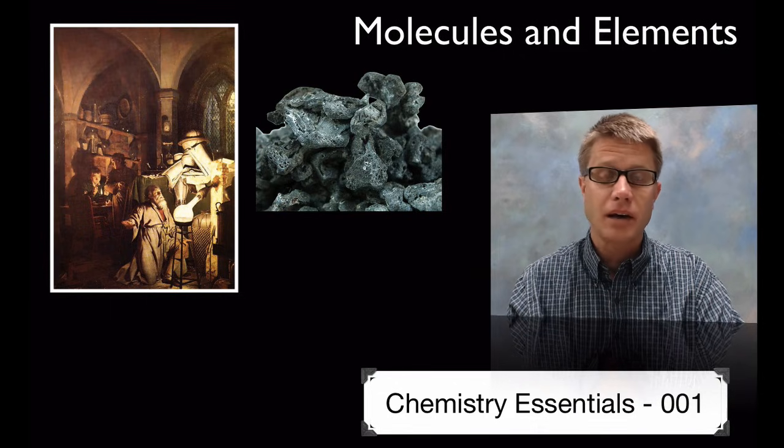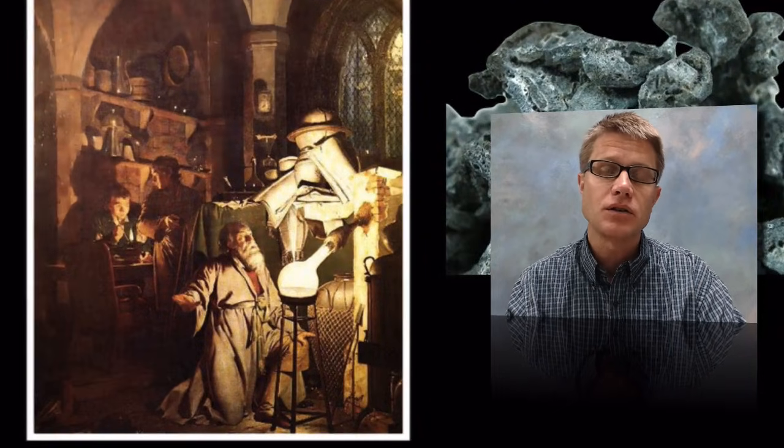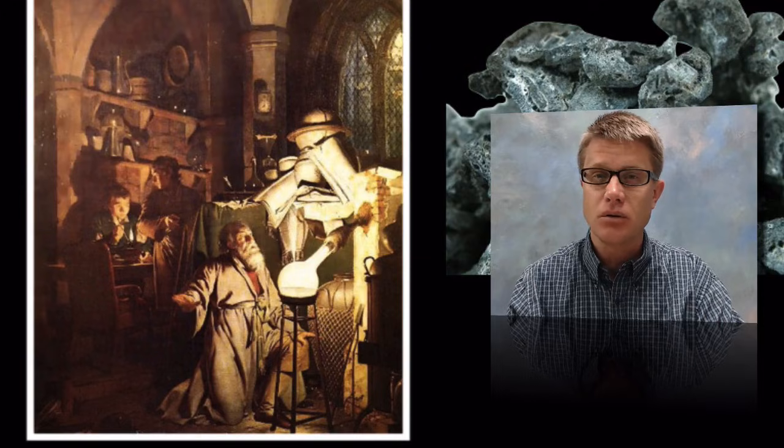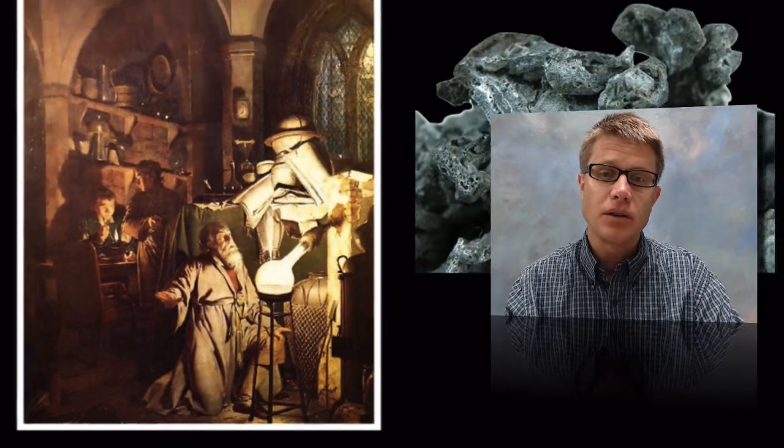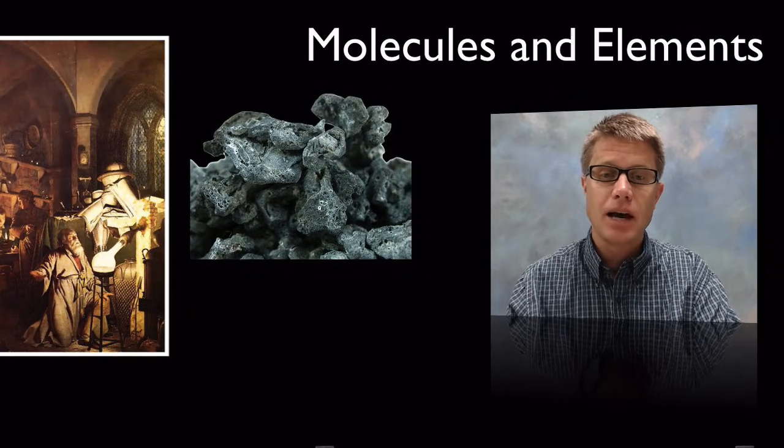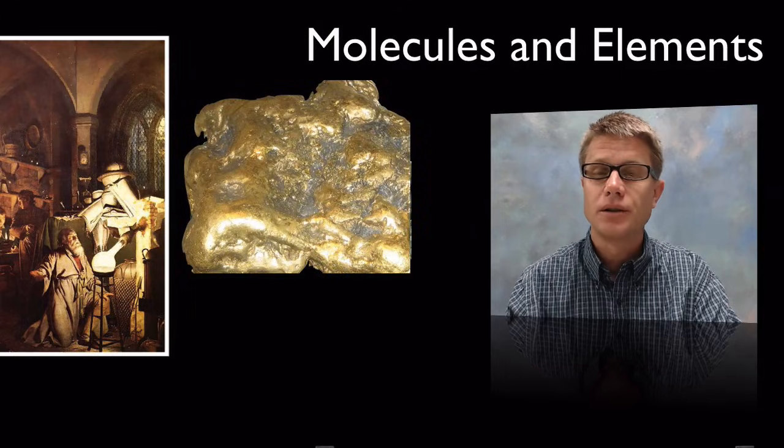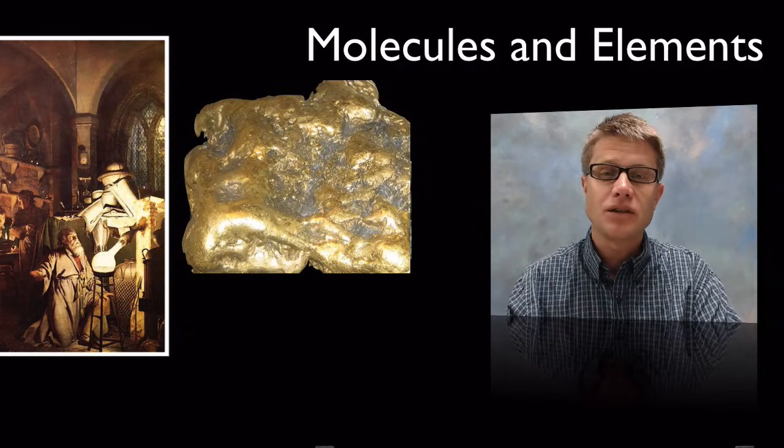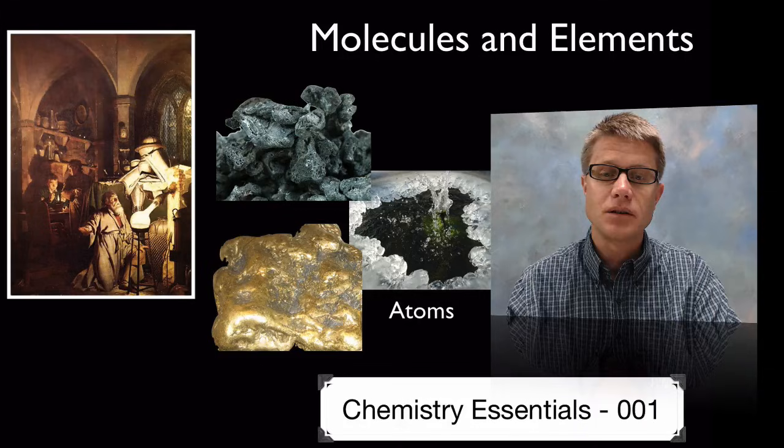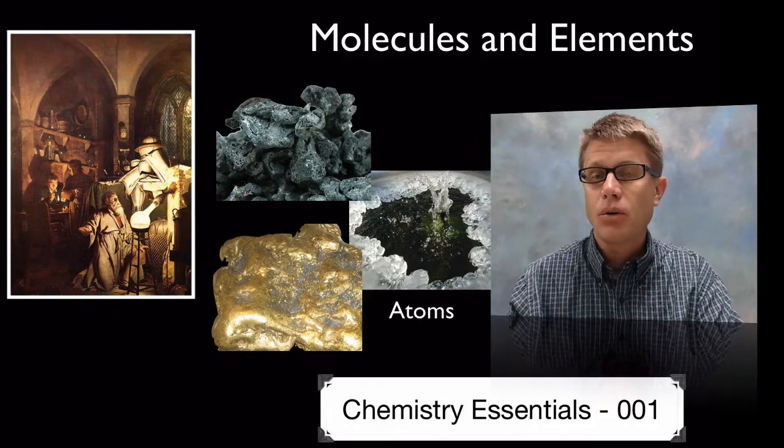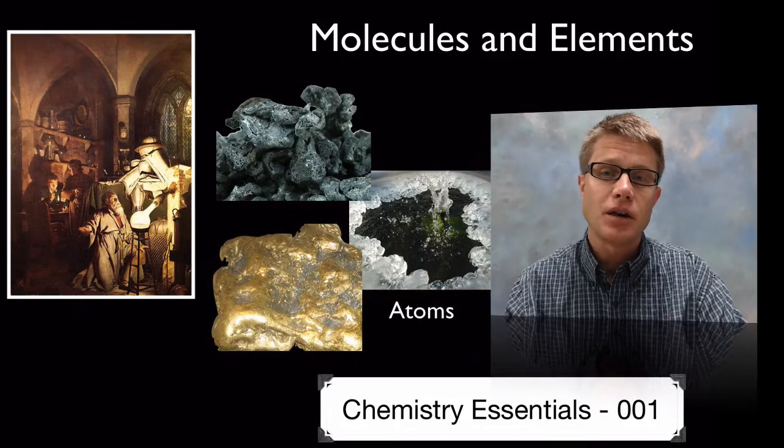The history of chemistry goes way back to the alchemists. The alchemists searched for what was called the philosopher's stone. It was this magical stone that they thought could turn something like lead into gold. Now they never discovered the philosopher's stone, but they did start to discover some unique properties of elements and molecules. And the whole thing eventually led to this atomic theory.